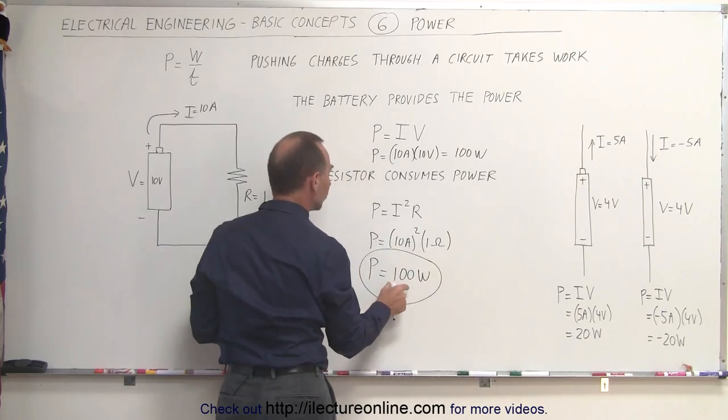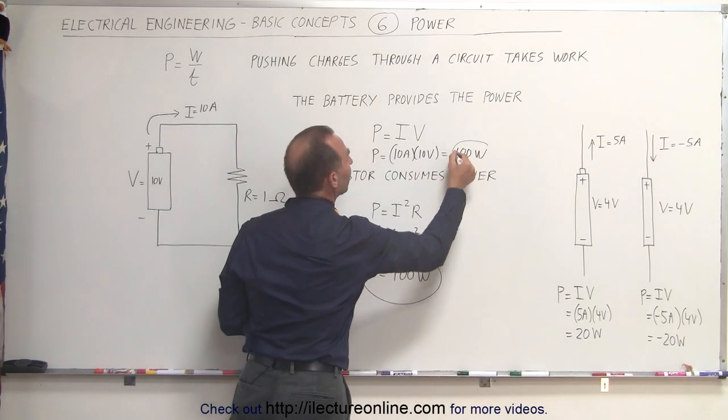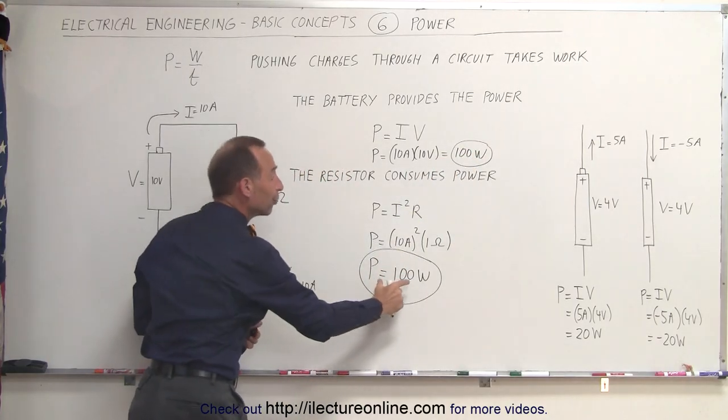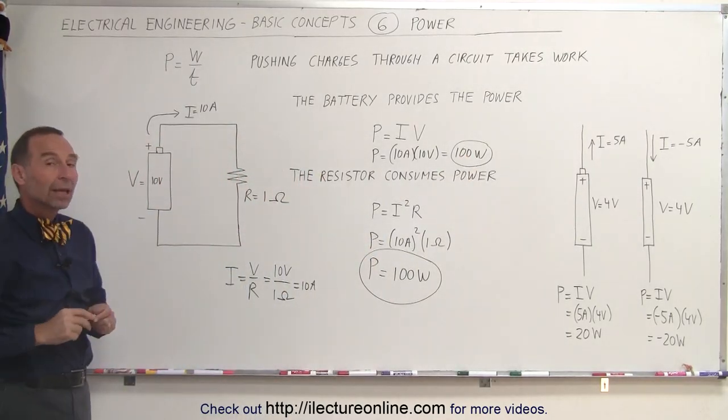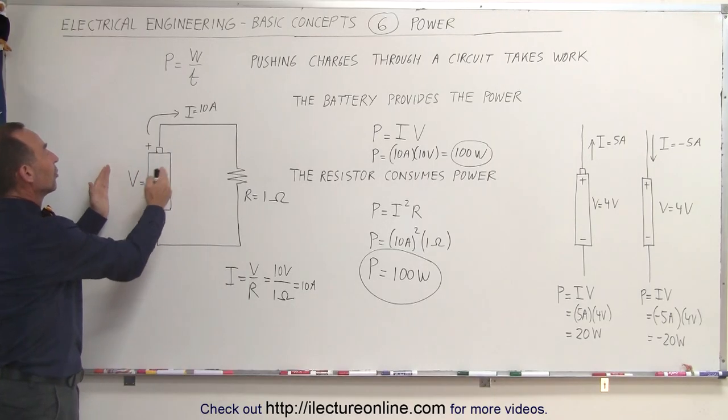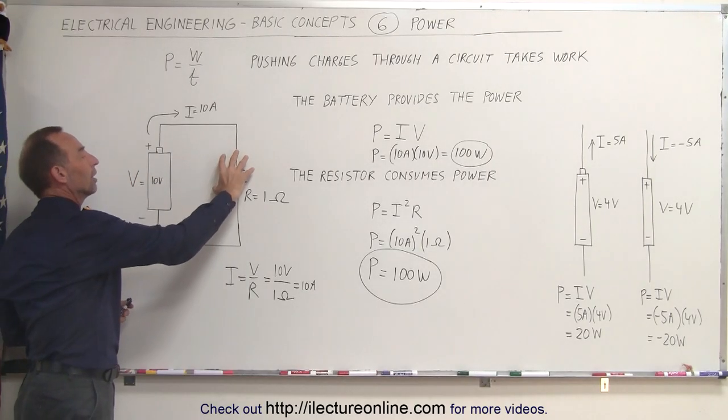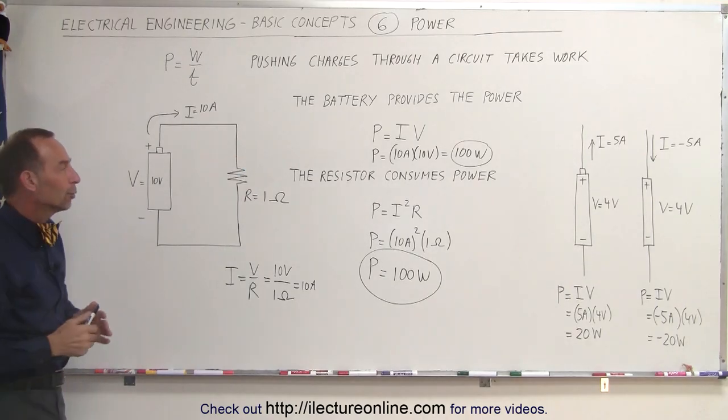Notice in this case that the power consumed by the battery is equal to the... I mean, the power consumed by the resistor is equal to the power provided by the battery. In many cases, like whenever we single out the source that provides all the power, we single out the component that consumes all the power, those should, of course, then be equal to one another.